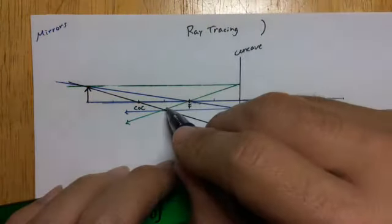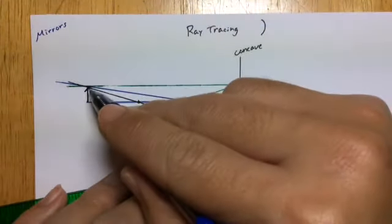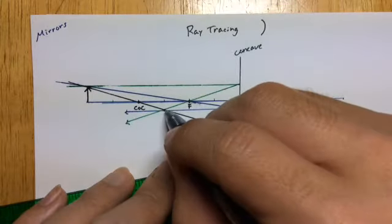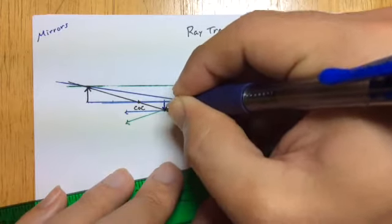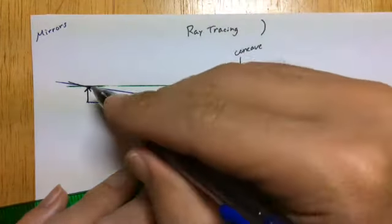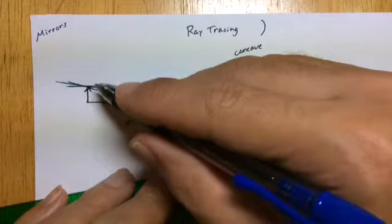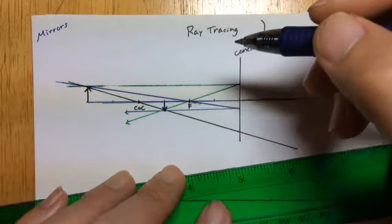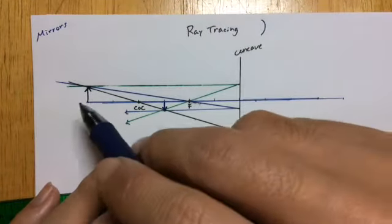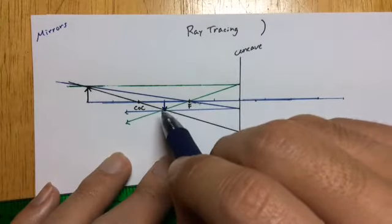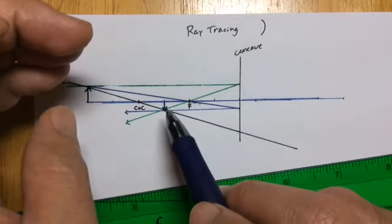All three lines cross right around the same point. The top of the object is where all three lines started, and where they cross is the top of our image. This is not an arrow pointing at the image — this is the actual image itself. So if this were a person, this would be an upside-down, smaller person. What we found is that with the object placed outside the center of curvature, the concave mirror creates a real image in front of it.